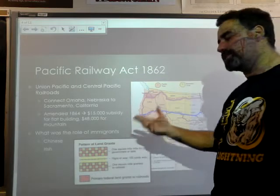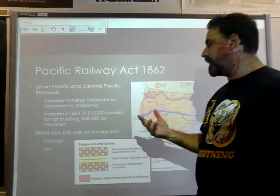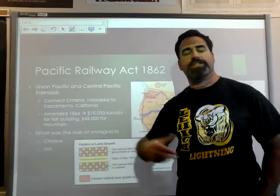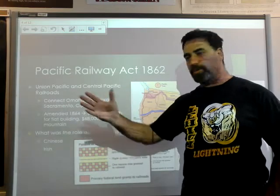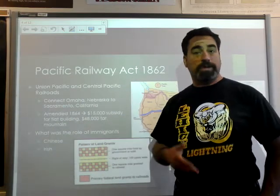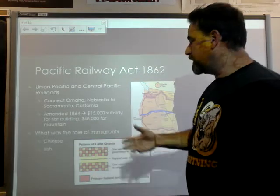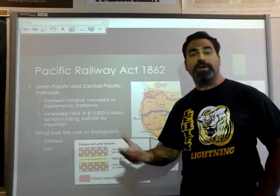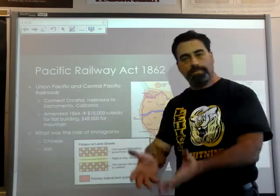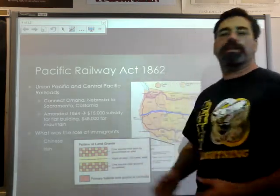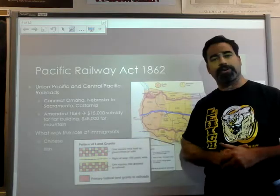In 1864, the law was amended so that railroad tracks built on flat straightaways would receive $15,000 per mile from the government, and anything built through the mountains would receive $48,000 per mile. So beyond the land grants, the government also provided cash to get things started.